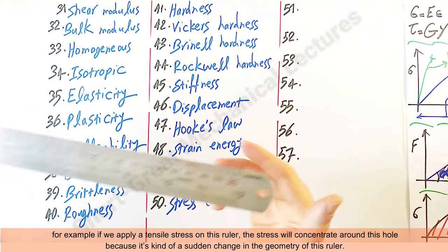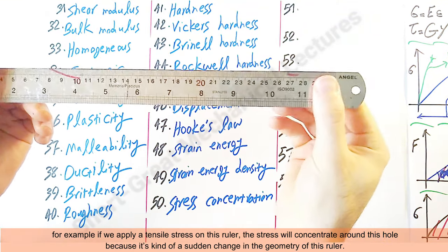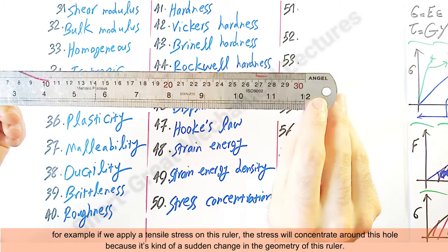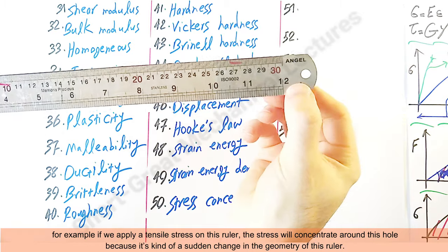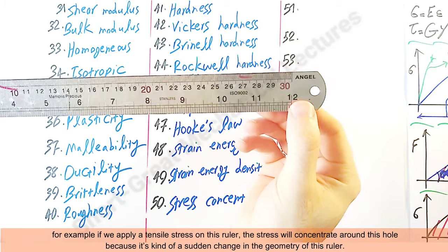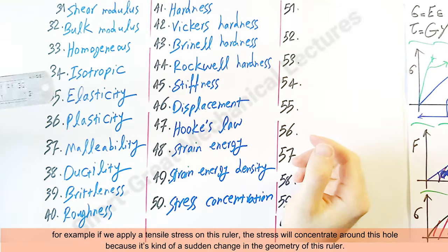For example, if we apply a tensile stress on this ruler, the stress will concentrate around this hole because it's kind of a sudden change in the geometry of this ruler.